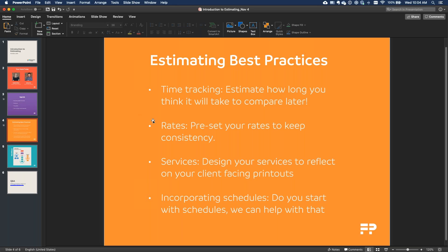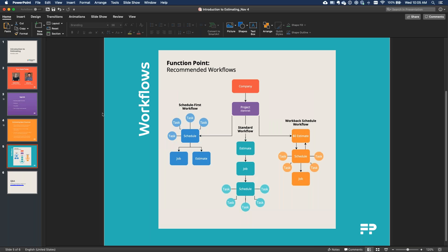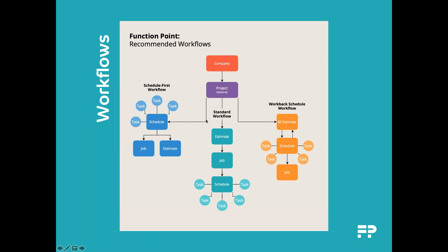We'll talk about how you can set all those different rate card types inside Function Point and how many you ideally should have for an agency. Another key best practice is to design your services in Function Point to reflect the client-facing printouts — services aren't just for internal reporting but are something you can share with your customers. Last but not least is incorporating schedules. Our estimating module can have schedules associated to estimates, though we'll cover that in our next webinar. Today we'll focus on the standard workflow: starting all jobs with an estimate and then turning that into a job.